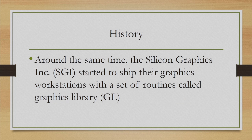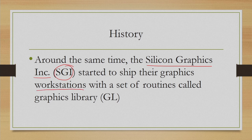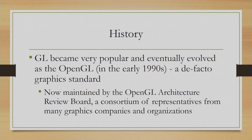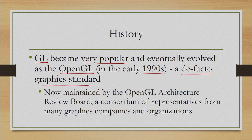Around the same time when other standards were being developed, Silicon Graphics Inc. (SGI) started to ship their workstations meant for graphics with a set of routines or library functions. Together these were called the Graphics Library or GL. Subsequently, these functions became very popular and eventually evolved into OpenGL in the early 1990s, which became a de facto graphics standard. This standard is now maintained by the OpenGL Architecture Review Board, a consortium of representatives from many graphics companies and organizations.